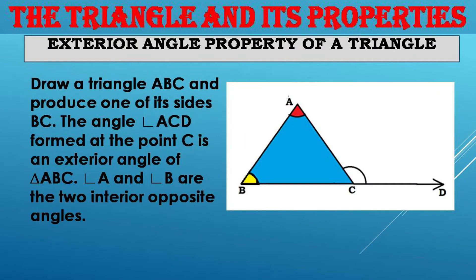The next topic is the exterior angle property of a triangle. For this, first we have to draw a triangle ABC and produce one of its sides BC. The angle ACD formed at C is an exterior angle of triangle ABC, and angles A and B are the two interior opposite angles. We have to draw triangle ABC and extend side BC to form the exterior angle ACD.